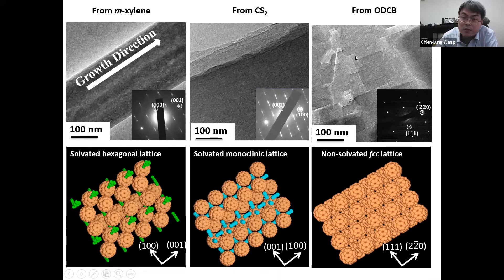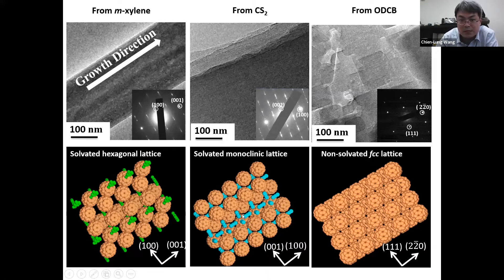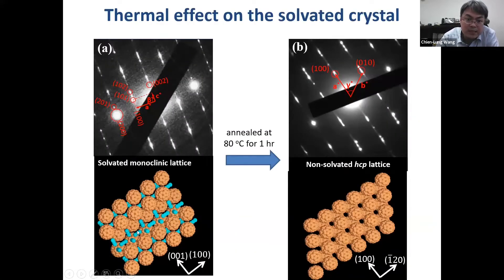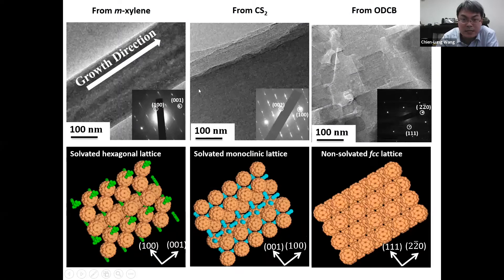It turned out that the crystals grown from ODCB gave higher mobility. To understand why, we used electron diffraction to check the packing structure of these C60 crystals. We found that in the two other crystals — although they showed continuous charge transport channels — solvent had been incorporated into the crystal structure. Since solvent is an insulator, it becomes a defect for charge transport. This is why the two solvated crystals give lower charge mobility. Fortunately, volatile solvents like CS2 can be removed by annealing. By monitoring the diffraction pattern, we confirmed that the crystal changes from a solvated lattice to a non-solvated lattice, ultimately giving the highest charge mobility with a continuous charge transport channel.